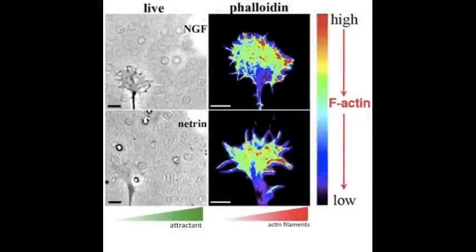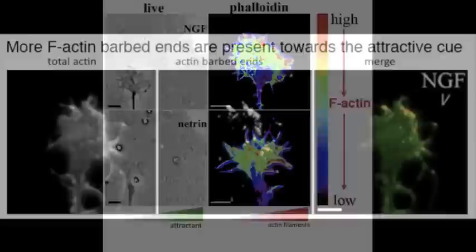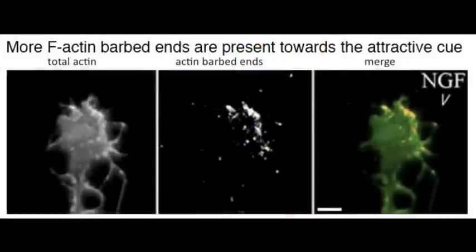In growth cones turning to attractive guidance cues NGF or Netrin, actin filaments accumulate in growth cone regions closer to the attractive cue. Growth cone regions closer to an attractive cue also contain many actin filament barbed ends, where actin polymerization pushes the leading margin forward.